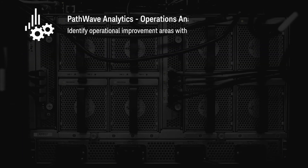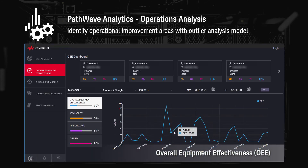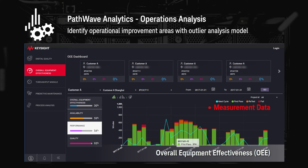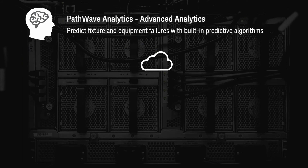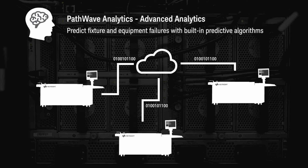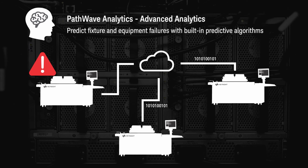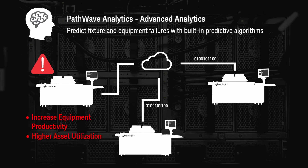Fourth, the software's automated outlier analysis algorithms take advanced process controls to the next level. By using a combination of measurement, machine health, and metadata, you can effectively detect potential process and test outliers. Fifth, its built-in predictive algorithms can identify fixture and equipment failures before they happen.